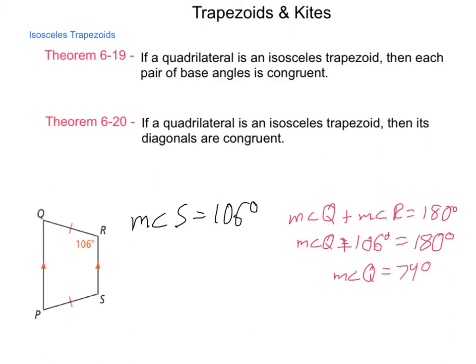Then, again employing Theorem 619, the measure of angle P is also equal to 74 degrees. Not all trapezoids are isosceles, but when we do have them, we receive this special relationship. Let's take a look at something that is true about all trapezoids — the midsegment.